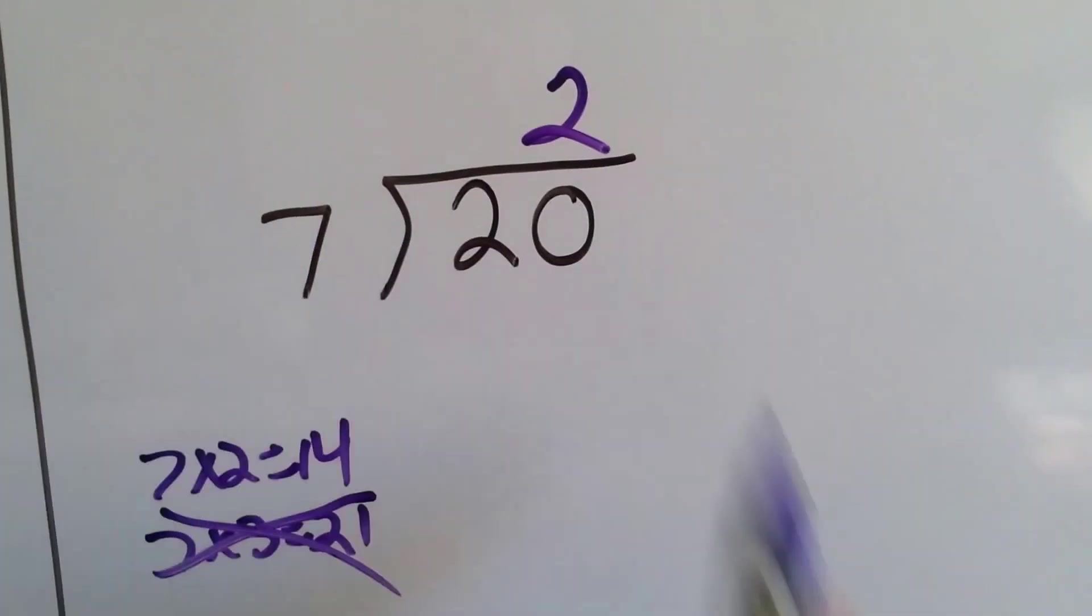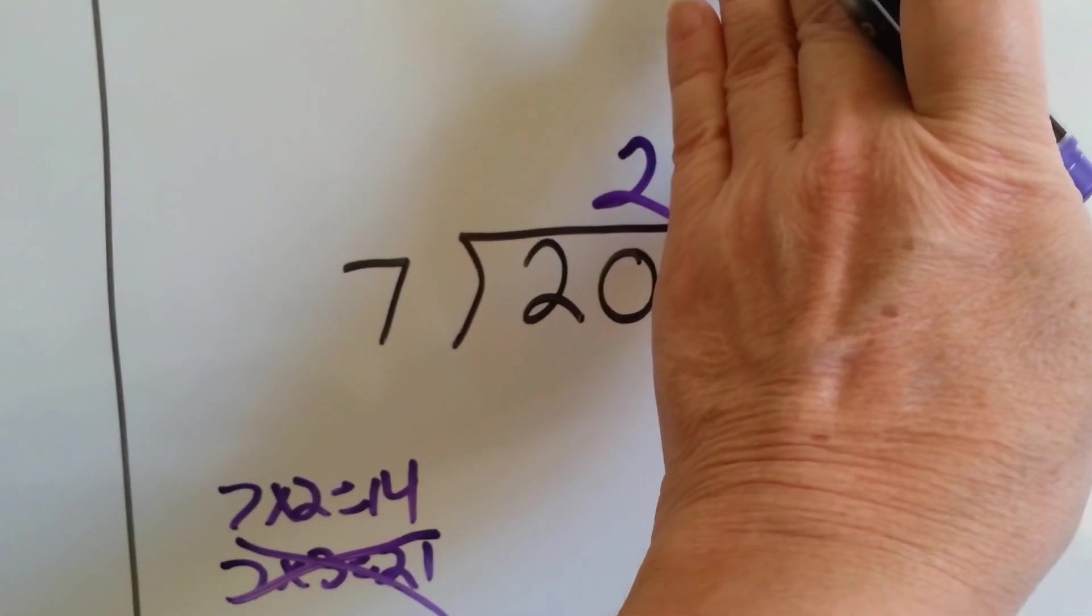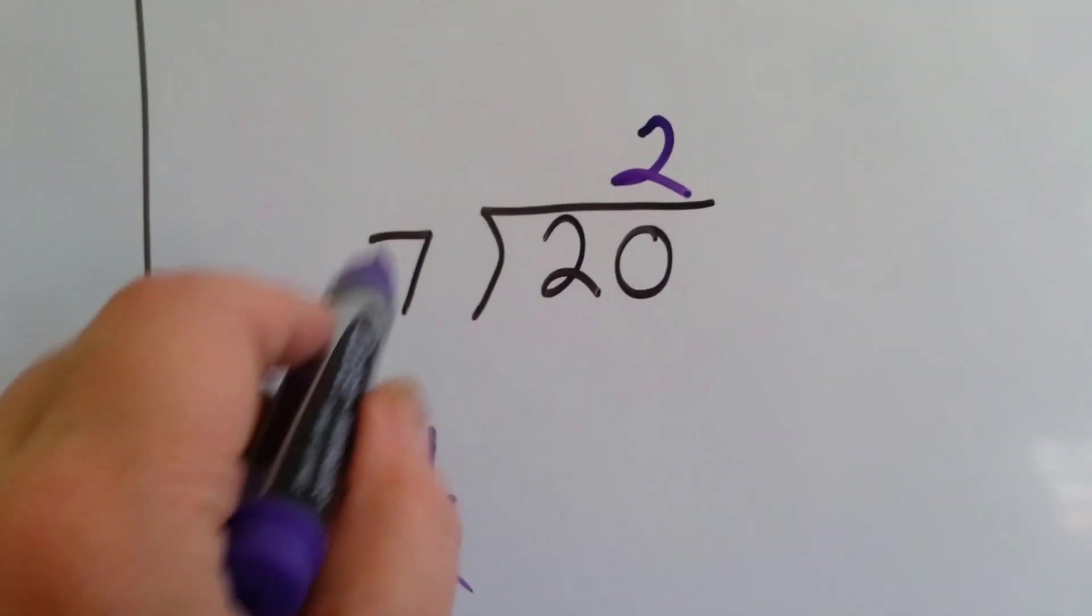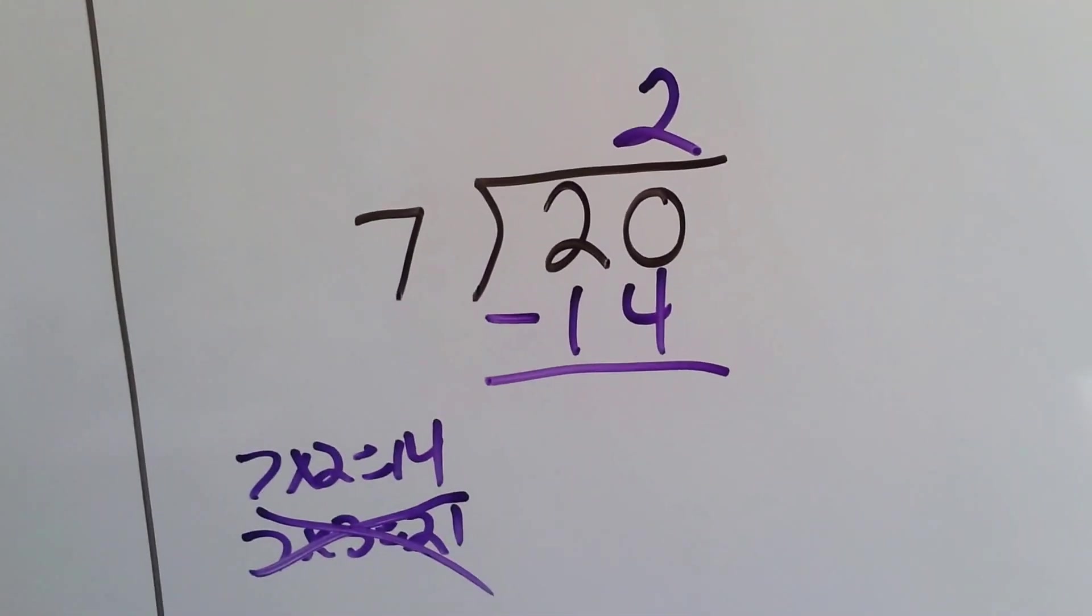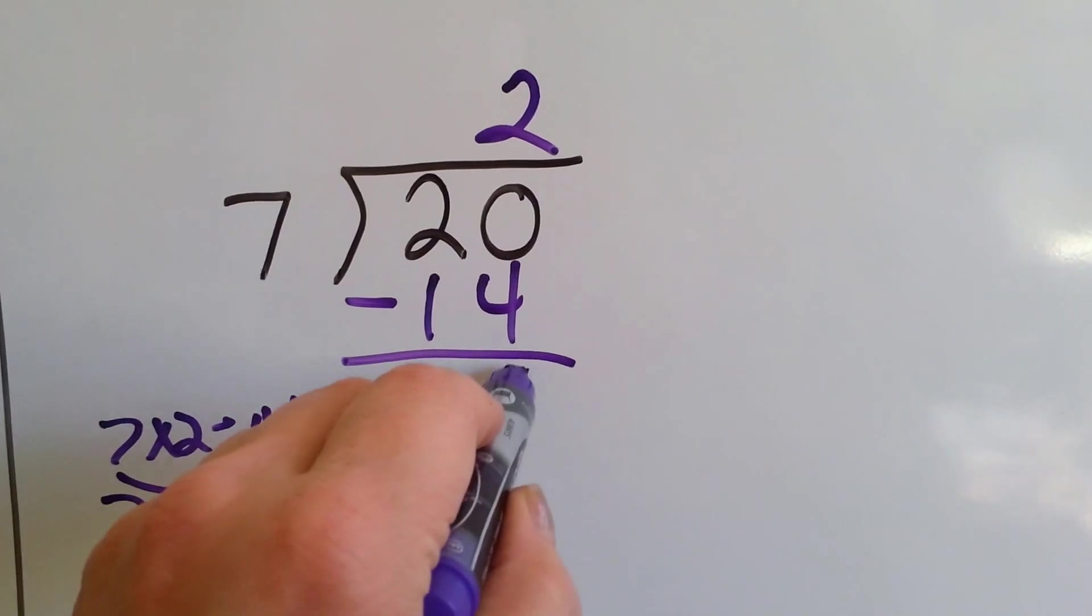So we're going to have to do 7 times 2. Now because we're doing the entire 20, the 2 goes up here, doesn't it? Because we're not putting 7 into 2. We're putting 7 into 20. So the 2 goes over the 0 of the 20 to show that. We do 7 times 2, which is 14, and we do our subtraction.